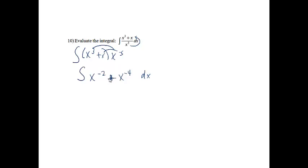Then from here, since there's a plus sign, we can just take the integral of each part separately. Remember, we'll just add 1 to the power and multiply that in front by the reciprocal. So if I increase this power by 1, I'll get x to the negative 1. The reciprocal of negative 1 is negative 1.